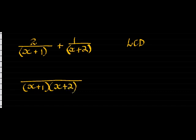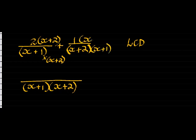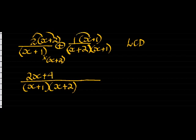So, in order to add these two together, I need both of them to have the same denominator, which means this denominator I'm going to have to multiply with an x plus 2. And what I do in the denominator I must do in the numerator as well. So x plus 2 is multiplied in the numerator as well. This one gets multiplied with an x plus 1 in the numerator as well.